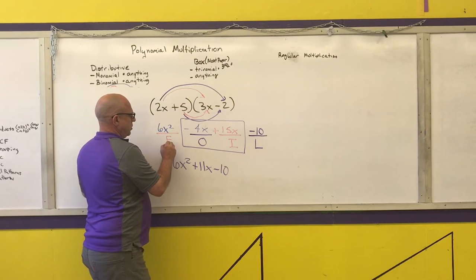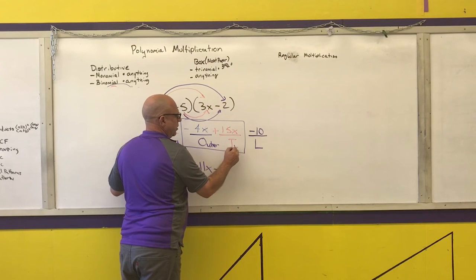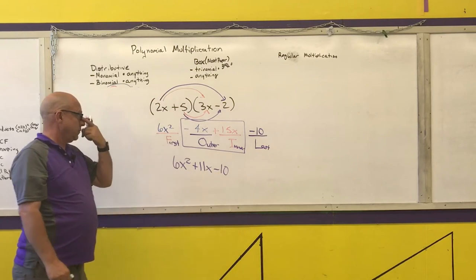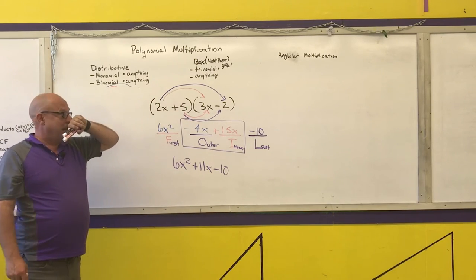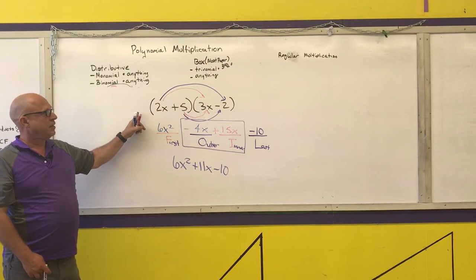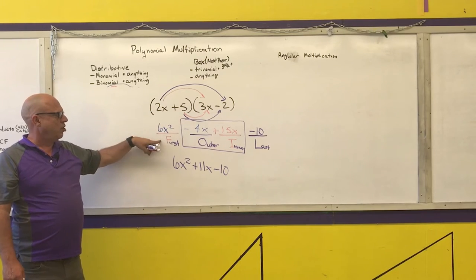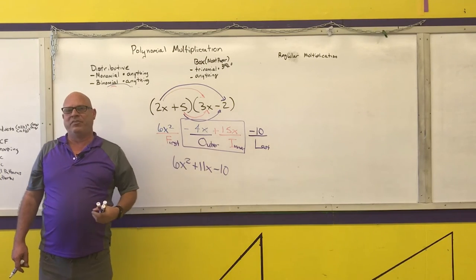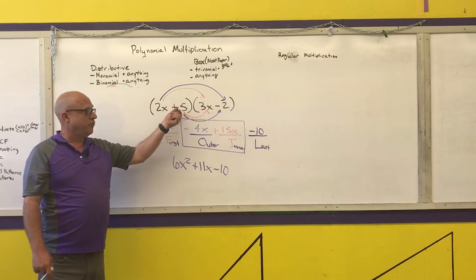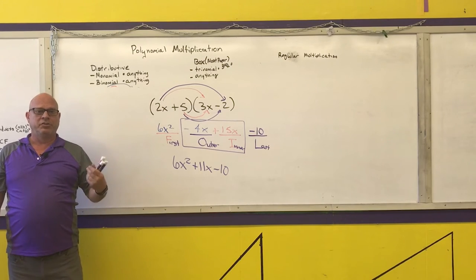F stands for First, O stands for Outer, I stands for Inner, and L stands for Last. If you are in 8th grade math, Algebra 1, or Geometry and you are using the FOIL method, I either need to see the arrows on your distribution or I need you to write F-O-I-L so I know what method you're doing. If you are in Algebra 2 or beyond, I don't need to see any work to go from the problem to the answer.